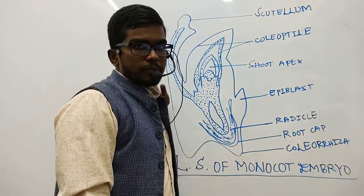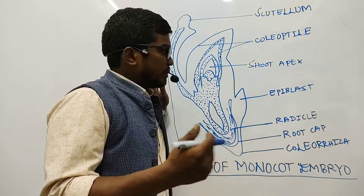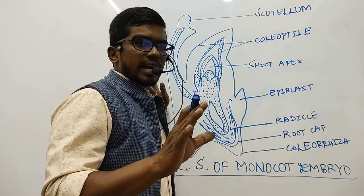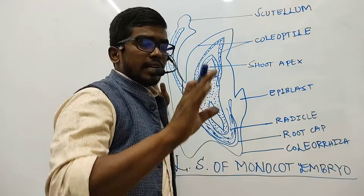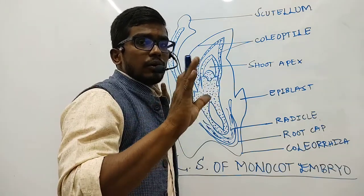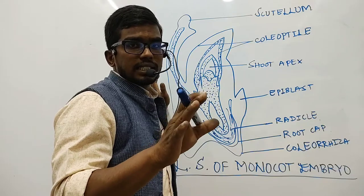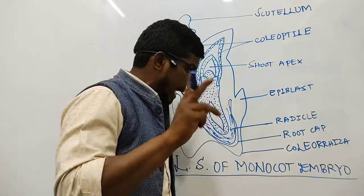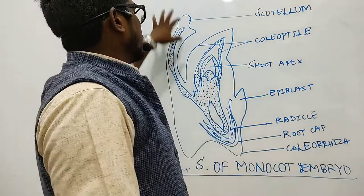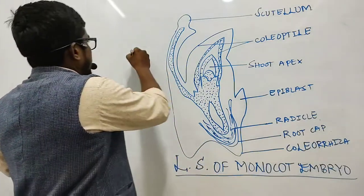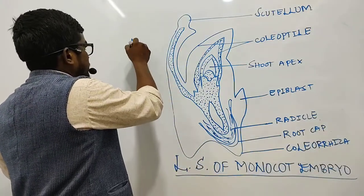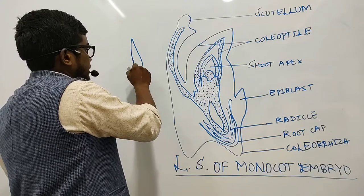Even in the case of dicot embryo it is simple. Here, let me tell you, we can find, as I said before, the differences only in the later stages of embryo development, not in the initial stages between the dicot and monocot embryo.